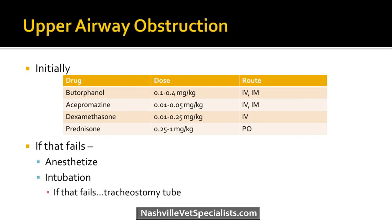For upper airway obstructions, the initial drugs to try are butorphanol, acepromazine, and dexamethasone or prednisone. If that fails, sometimes you have to anesthetize and intubate — often using propofol to get them down and intubate until they calm down, temperature comes down, then slowly wake them up. If that also fails and you can't get a tube in, you may have to perform a tracheostomy.